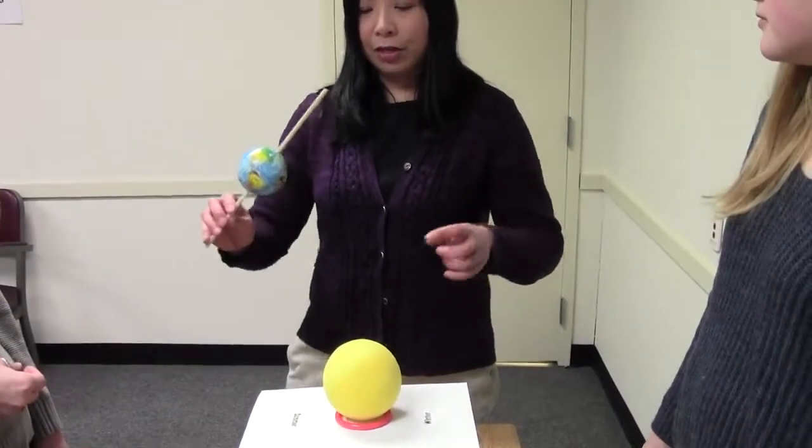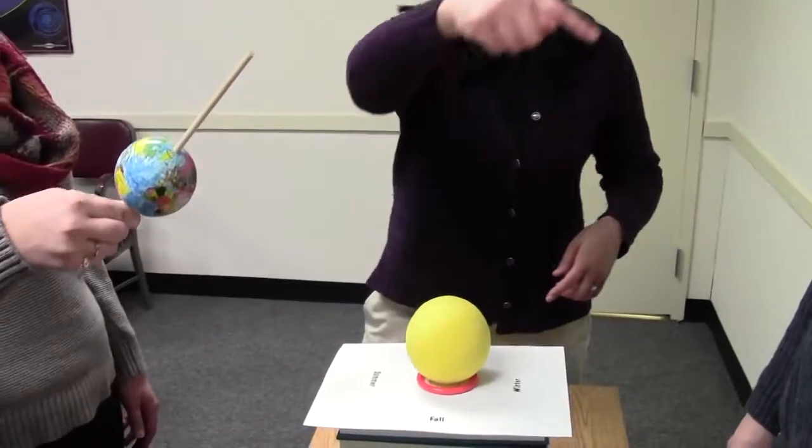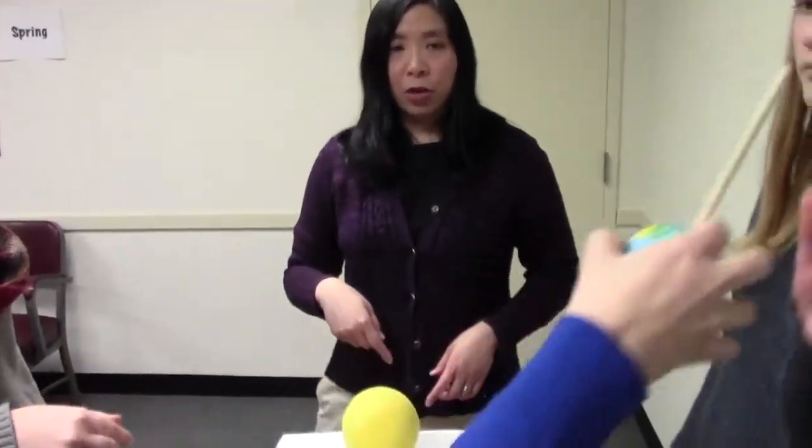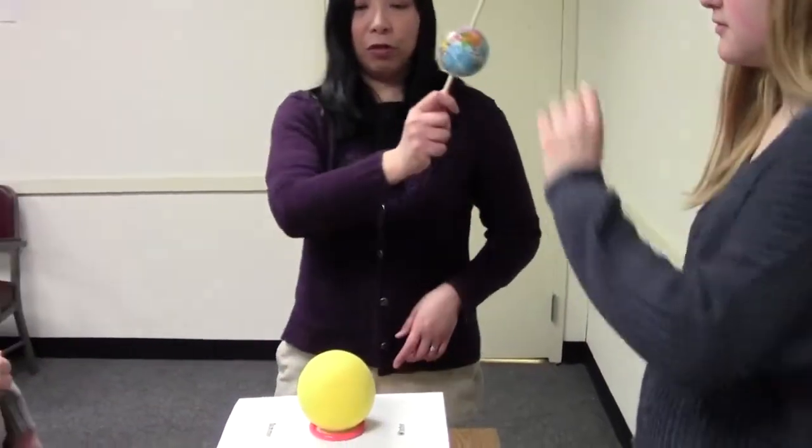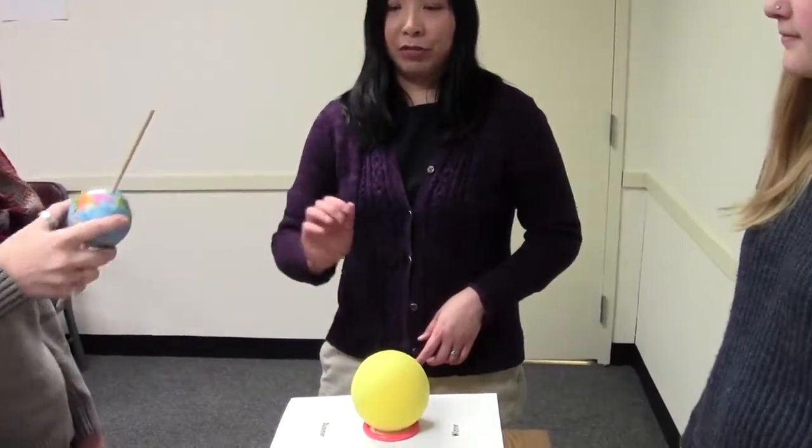Another incorrect thing that we see a lot is that they orbit in a circle above the Sun rather than going around the Sun. This is above the Sun.